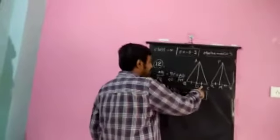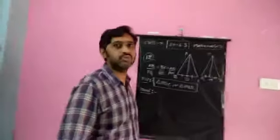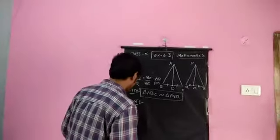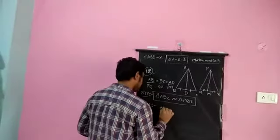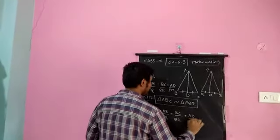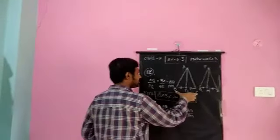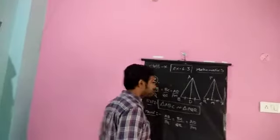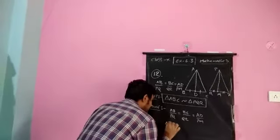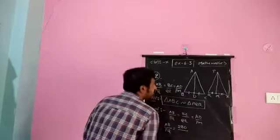Two sides are already in proportion; the third is not yet shown. If SSS is not directly achievable, I'll try another approach. Given: AB/PQ = BC/QR = AD/PM. Since D is the midpoint of BC, I write BC as 2·BD, and similarly QR as 2·QM. So AB/PQ = 2BD/2QM = AD/PM.